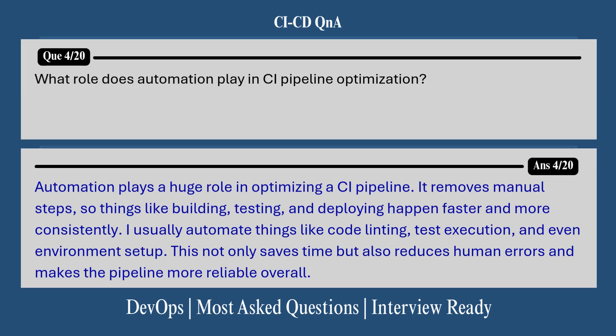The next question is about the role of automation. What role does automation play in CI pipeline optimization? Automation plays a huge role in optimizing a CI pipeline — it removes manual steps, so things like building, testing, and deploying happen faster and more consistently. I usually automate things like code linting, test execution, and even environment setup. This not only saves time but also reduces human errors and makes the pipeline more reliable overall.